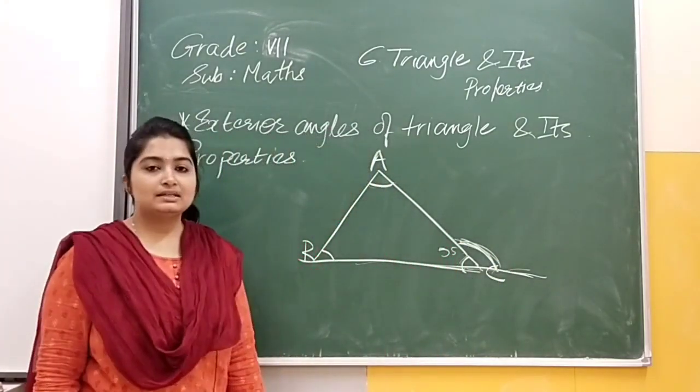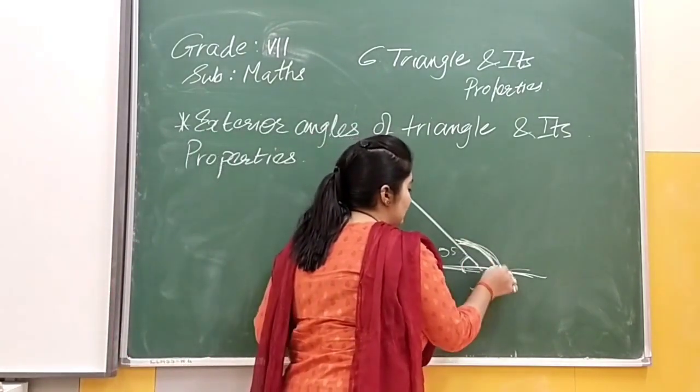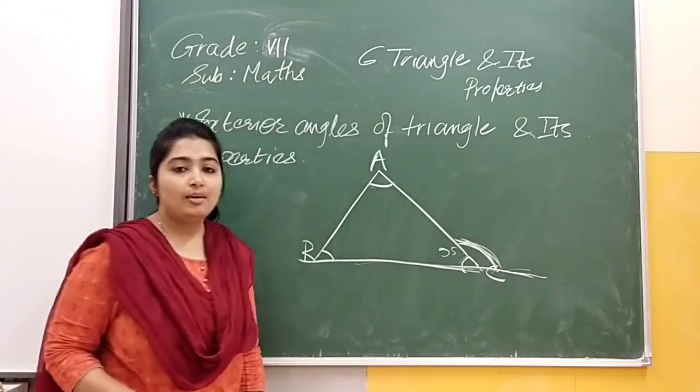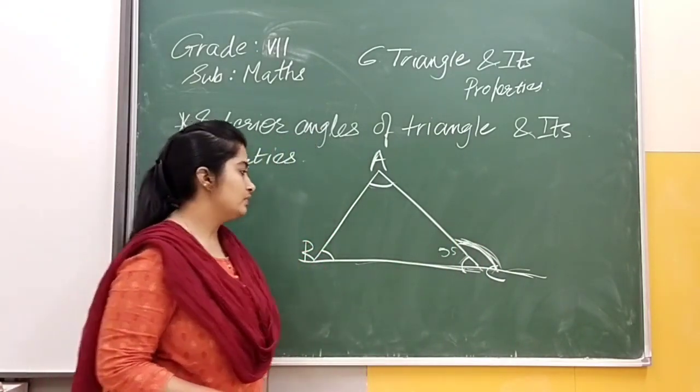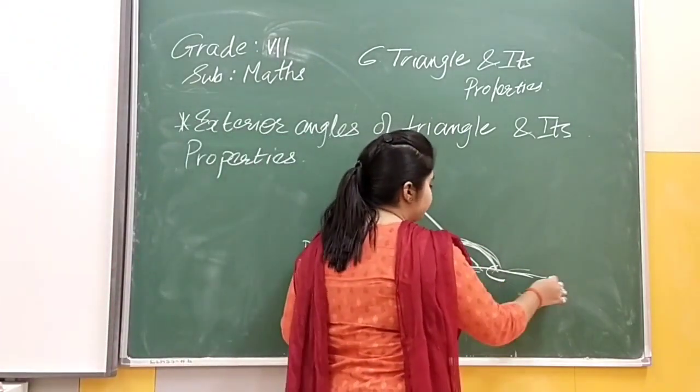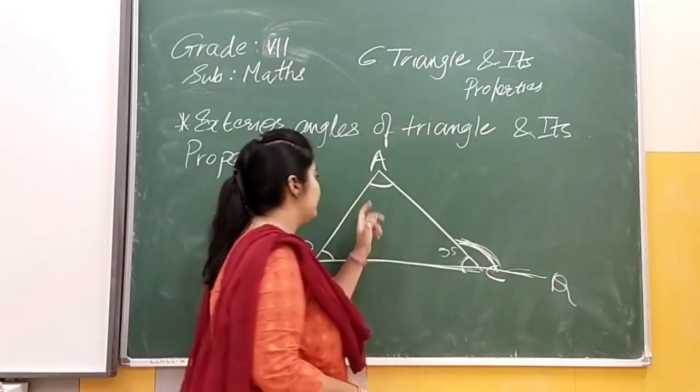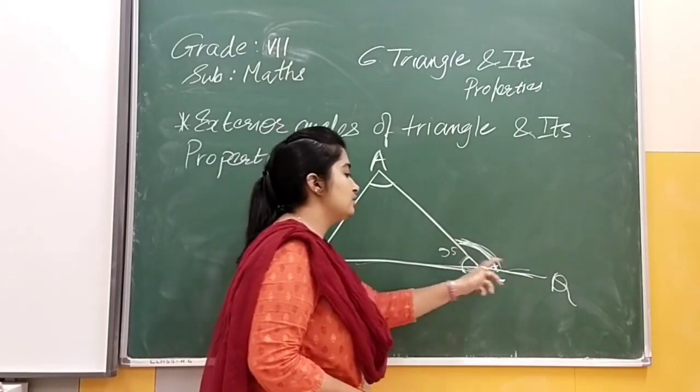Now the property says that this exterior angle will be equal to the sum of the two opposite interior angles. For suppose that is our angle. Here I have drawn Q.